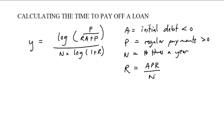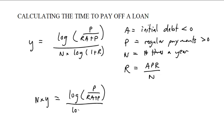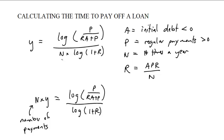This is the formula. If you multiply both sides by n, you get n times y equals the log of p over (r times a plus p) divided by the log of (1 plus r). And n times y is the total number of payments. For example, paying off a debt in 5 years with monthly payments is 5 times 12, or 60 payments. A lot of people forget to divide by that n.